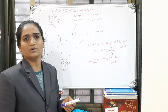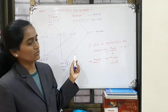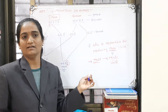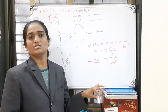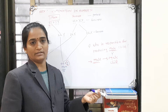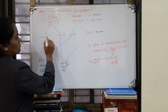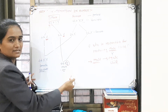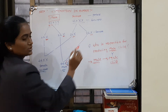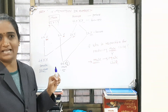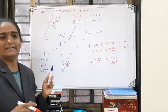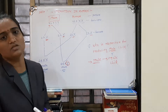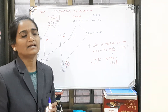The mother is blamed as if she is unable to produce a male child. But today, from the topic of sex determination in human beings, we have learned that the father is responsible for producing a son or daughter. If the father contributes an X chromosome, a daughter is produced; if he contributes a Y chromosome, a son is produced. In females, both sex chromosomes are X, so only Y — which comes only from the father — is responsible for producing a male child.